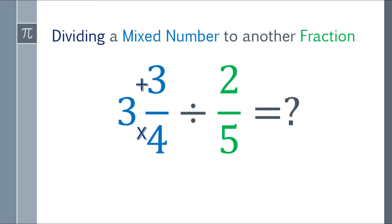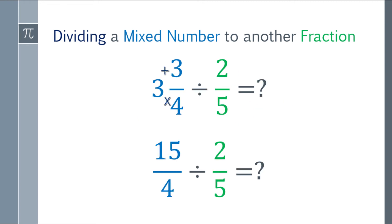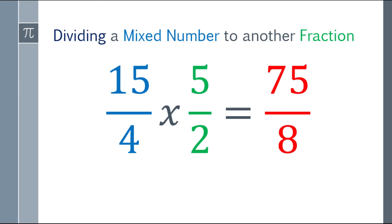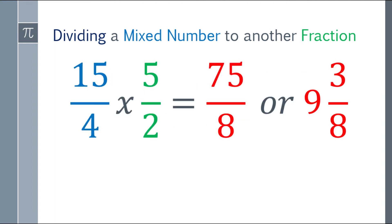Going back to the problem: three and three-fourths, divide by two-fifths. First, convert three and three-fourths to an improper fraction. Four times three is twelve, plus three is fifteen — so that's fifteen over four. Fifteen over four divide by two-fifths. Next, take the reciprocal of two-fifths, which becomes five-halves, and change the division sign to multiplication. Multiply the numerators: fifteen times five is seventy-five. For the denominator: four times two is eight. That's already the answer. However, if you want to express it as a mixed number, divide seventy-five by eight — that gives nine with a remainder of three. So the final answer is nine and three-eighths.